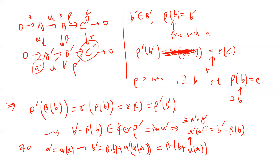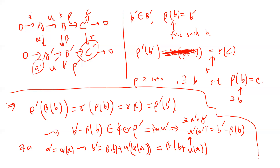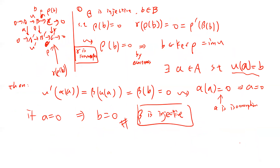Setting b_new = b + μ(a), we have β(b_new) = b', which shows that β is surjective. So we have found the required preimage. This completes the proof that β is an isomorphism, since we have shown both injectivity and surjectivity.